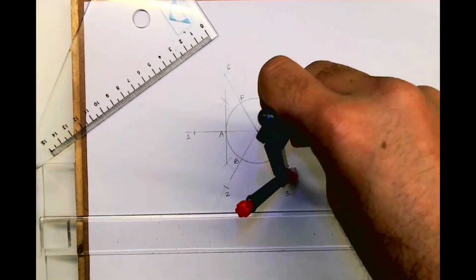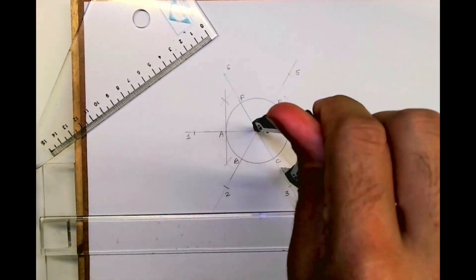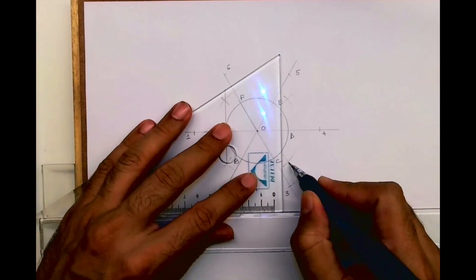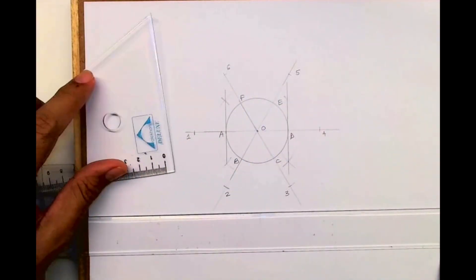Same thing, we can bisect O-4, so we'll get a tangent at point D.